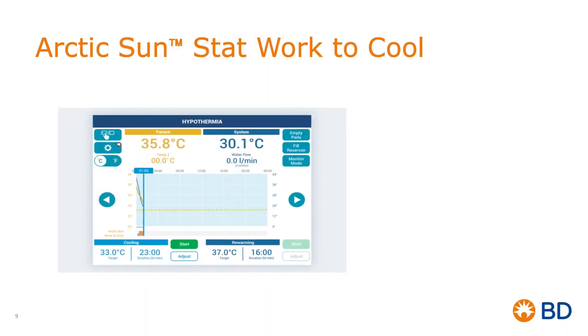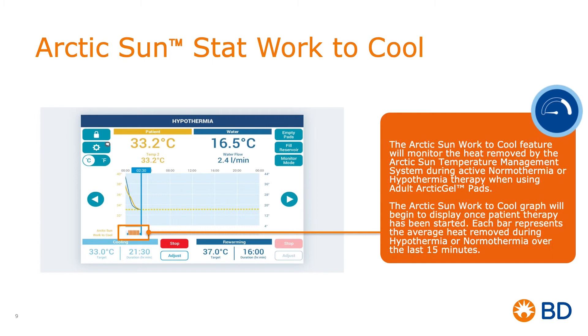Question: how can I assess my patient for heat generation? Work2Cool continuously monitors fluctuations in water temperature to indicate when your patient may be generating heat. The Work2Cool information displayed at the bottom of the therapy graph can show average heat removed by the patient throughout therapy. When the gauge is displaying blue, it is an indication that the system is not working too hard and the patient should be monitored as normal.